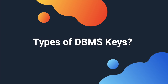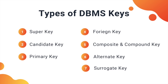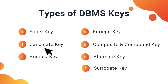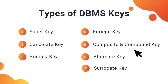It's time for the main event — types of DBMS keys. There are eight different types of DBMS keys, of which super key is like the default key, and composite and compound keys are like cousin sisters. We will be starting with super key, then candidate key, then primary and alternate keys, then the foreign key which is different from all others, and then the remaining keys: composite, compound, and surrogate.